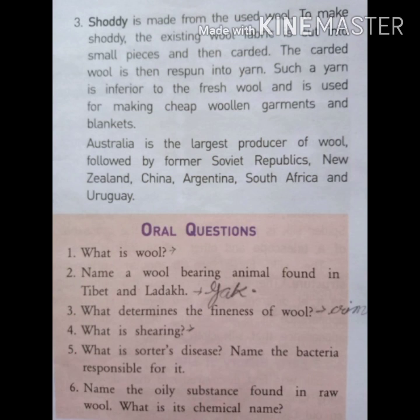The carded old wool is then spun into yarn. Such yarn is inferior to fresh wool and is used for making cheap woolen garments and blankets. Shoddy is made after reusing old wool cloth — the used cloth is recycled and can again be used for making shoddy.